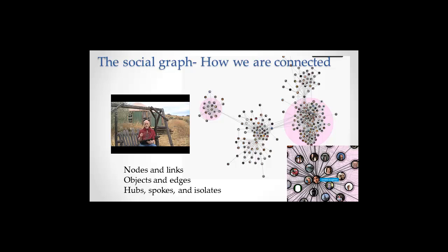Okay, nodes and links. Nodes are the objects in the network. Links are the connections between those objects. Facebook calls them, instead of nodes and links, objects and edges. We have the hub people who are at the center of interaction. We have the spoke people who are out connected to the hub people and also interconnected to other people in the group. And then we have the isolates who are connected to the group only by one link, only by one person.